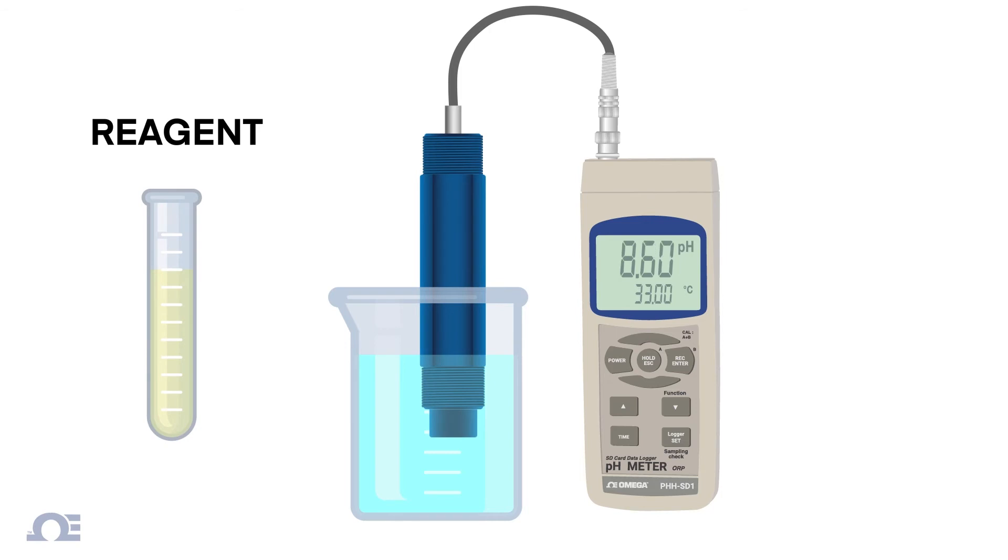For example, when a high alkaline level is detected, we can bring the pH level down by adding an acid to the solution. Conversely, if a low alkaline level is displayed, a base alkaline solution is added to bring the pH level back up.